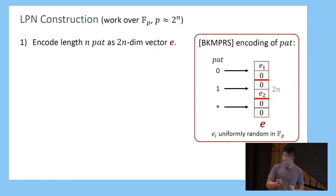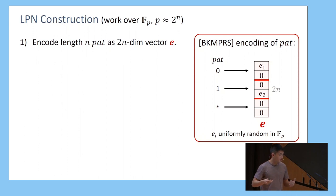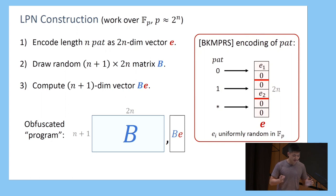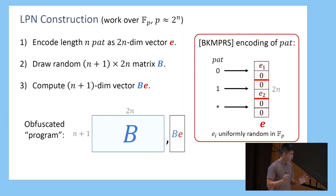For example, the pattern 0, 1, * gets encoded as a six-dimensional vector E, where E1 and E2 are uniformly random elements from F_p. The rest of the obfuscation is to draw a random matrix B of dimensions n+1 by 2n and output B along with B times E. I encode the pattern in E, multiply it by a random matrix, and that's the whole program.